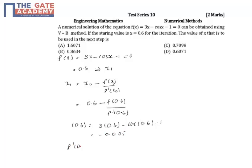Your f dash of 0.6, first of all, you have to derivate 3 plus sin x which is equal to 3 plus sin of 0.6 which is equal to 3.56. So you have f dash of 0.6 is equal to 3.56.